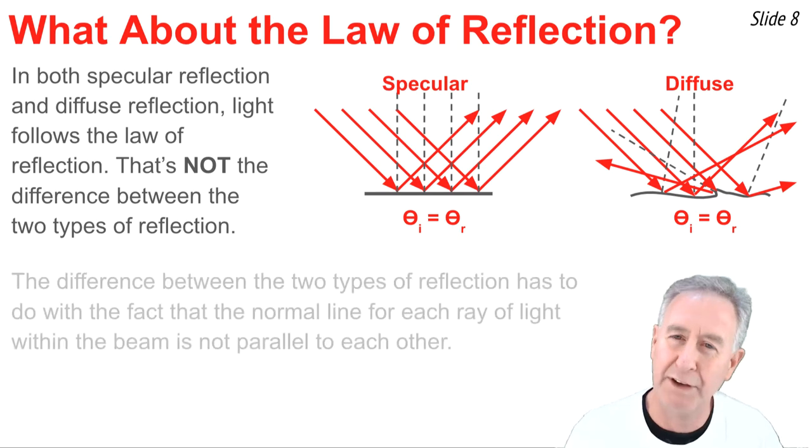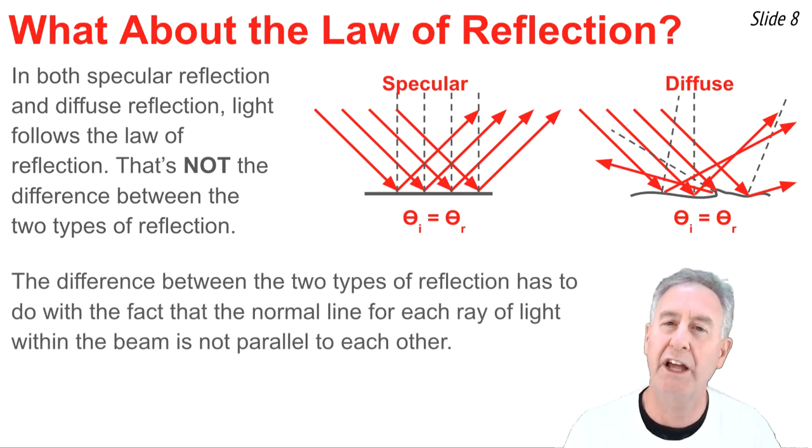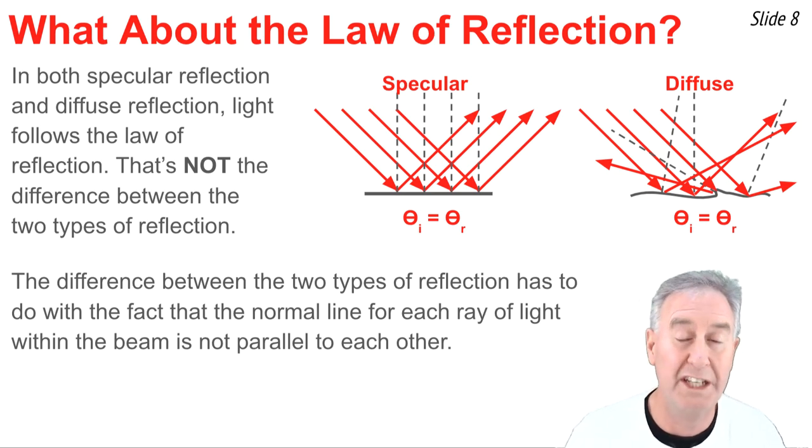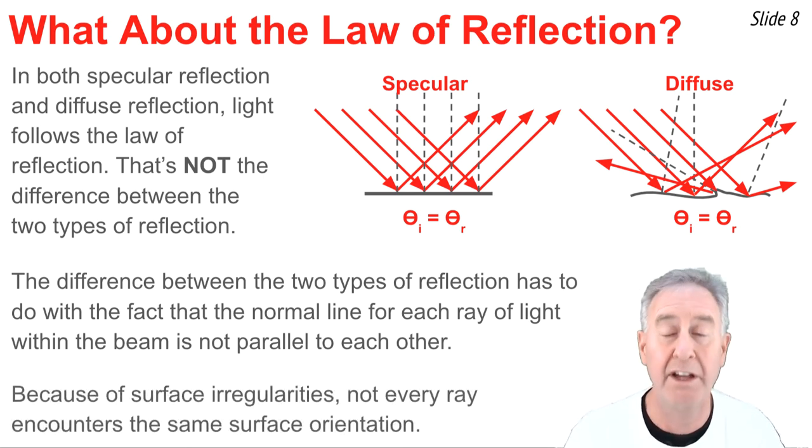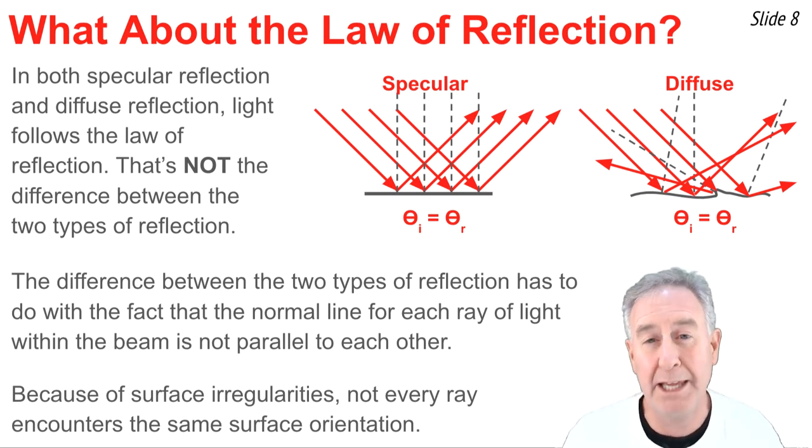What makes them different is the fact that for each individual light ray in the bundle or beam of light rays, the surface is oriented differently in diffuse reflection. But in specular reflection, every normal line has the same orientation. The result is that the surface irregularities for the rough surface mean each individual light ray in that beam approaches the surface with a different angle of incidence. Thus, when it follows the law of reflection, it's going to be reflected at a different angle than its neighboring light ray.